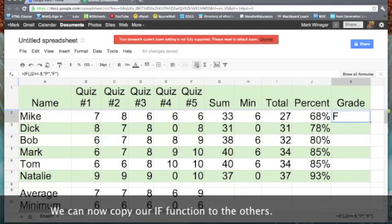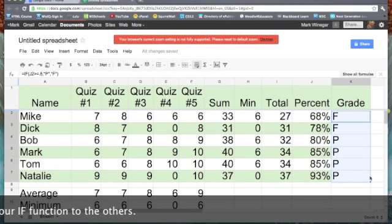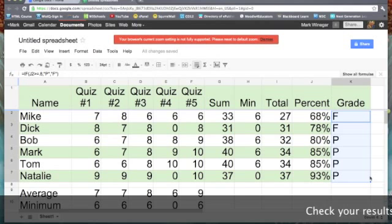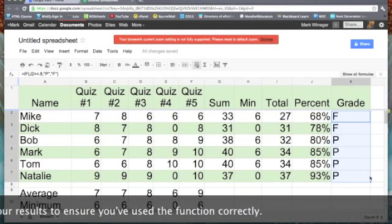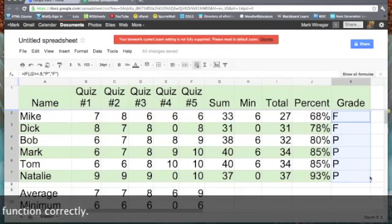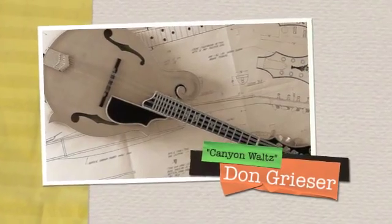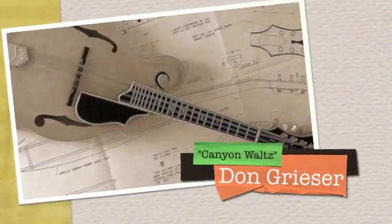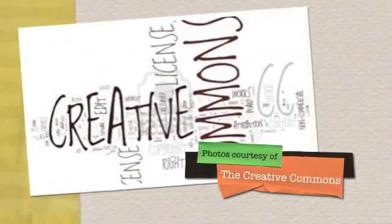So we have two failures—Mike and Dick—but Bob, Mark, Tom, and Natalie passed.